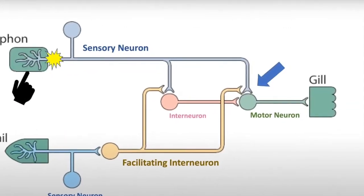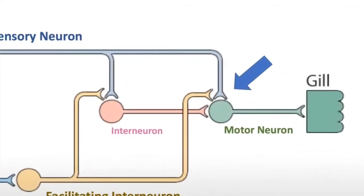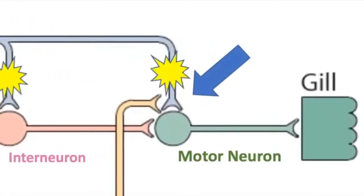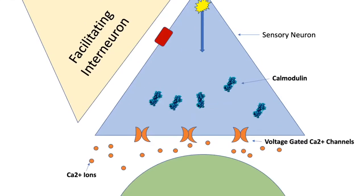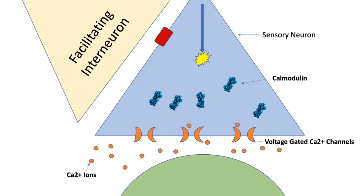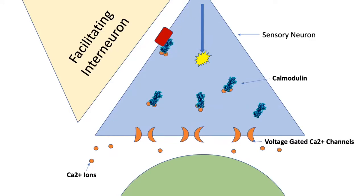Let's take a closer look at what happens between the sensory neuron and the motor neuron. The depolarization from a touch stimulus opens voltage-gated calcium channels, allowing an influx of calcium ions into the cell. These ions bind to calmodulin, which in turn activates adenylyl cyclase, which then turns ATP into cyclic AMP.